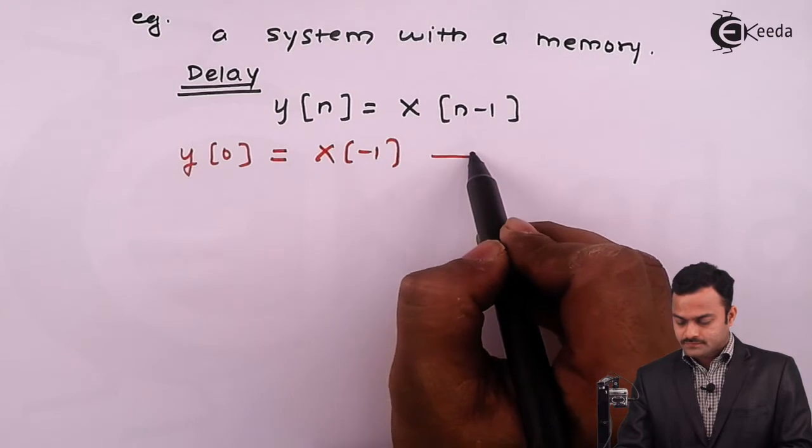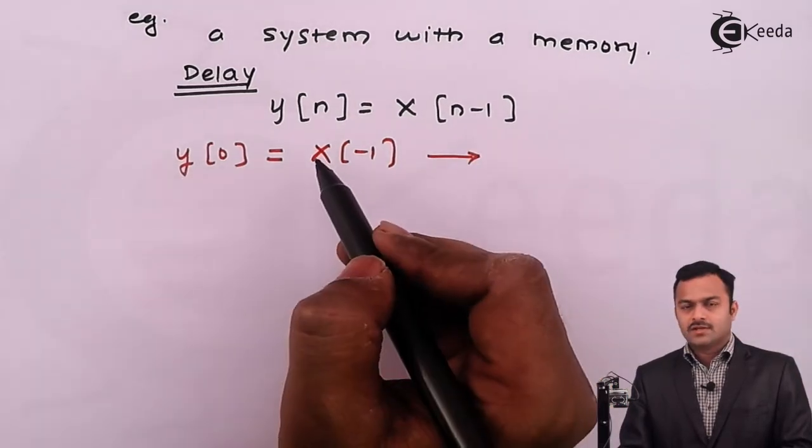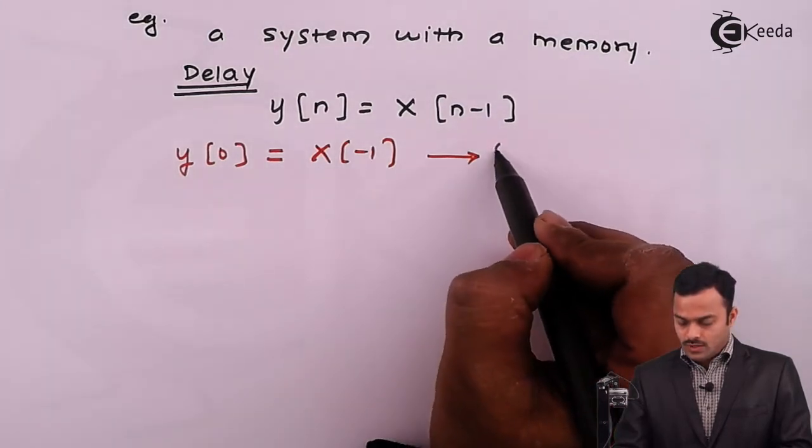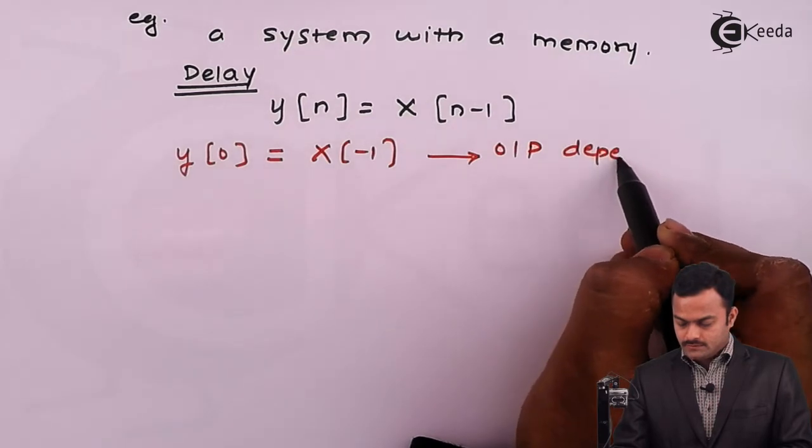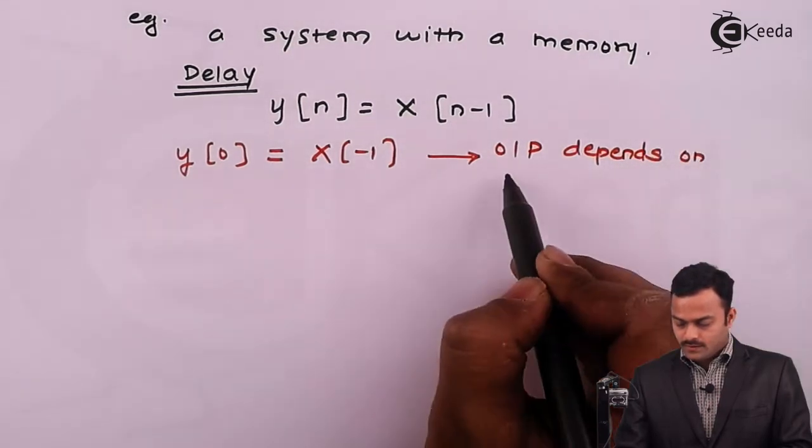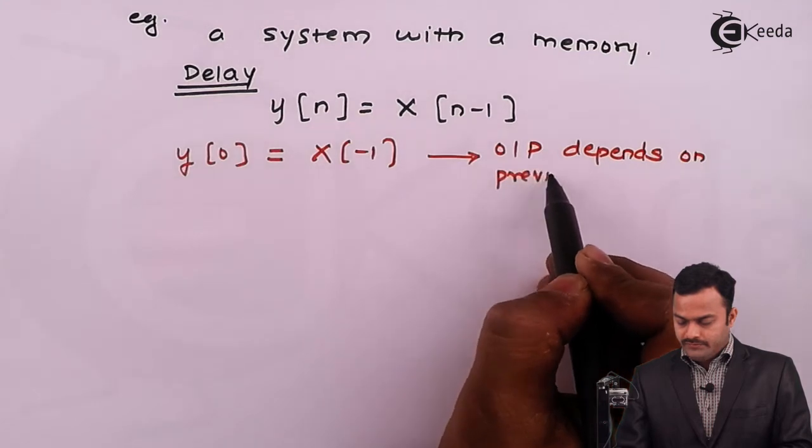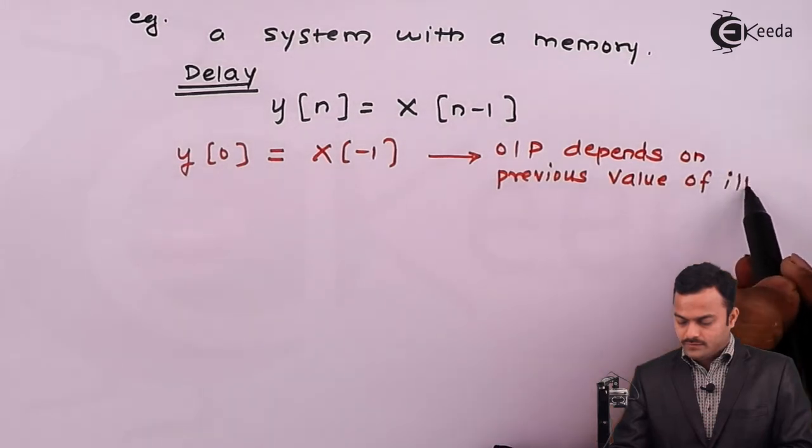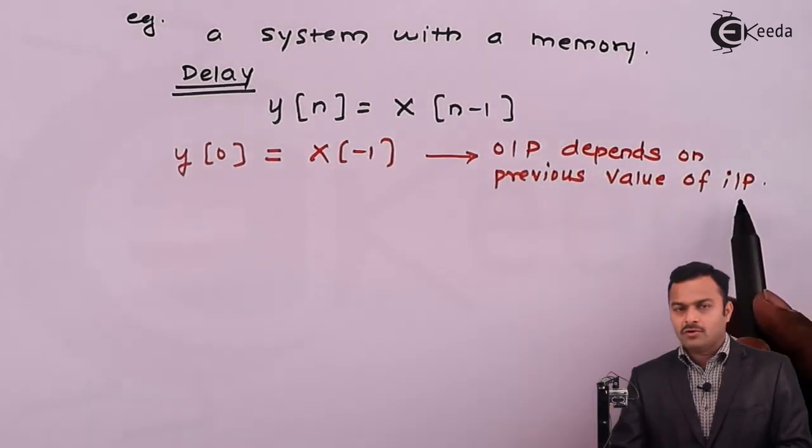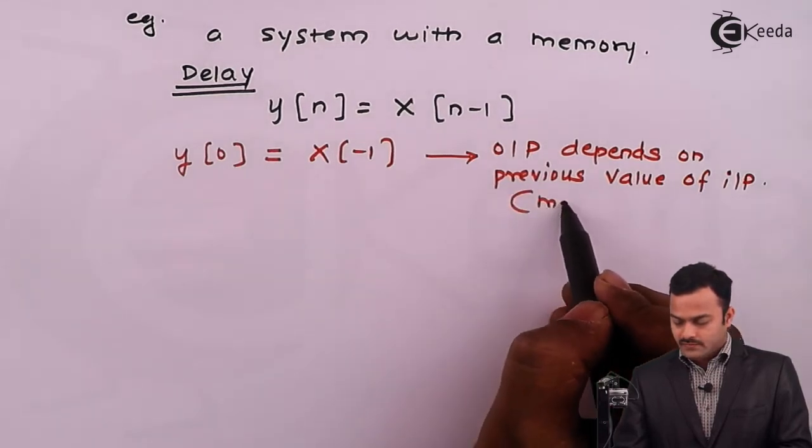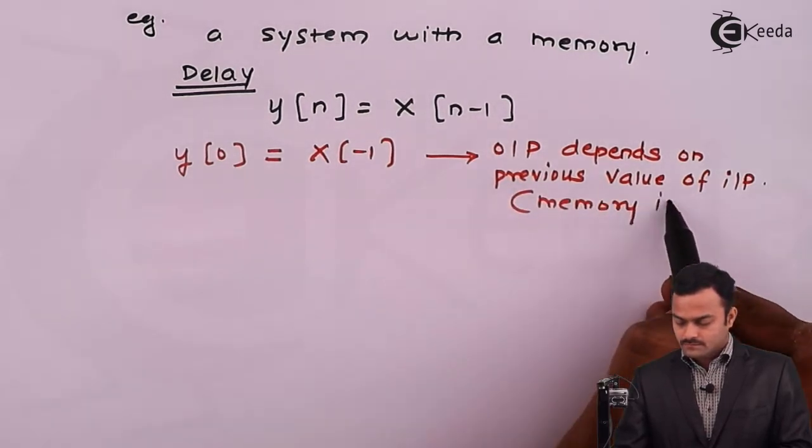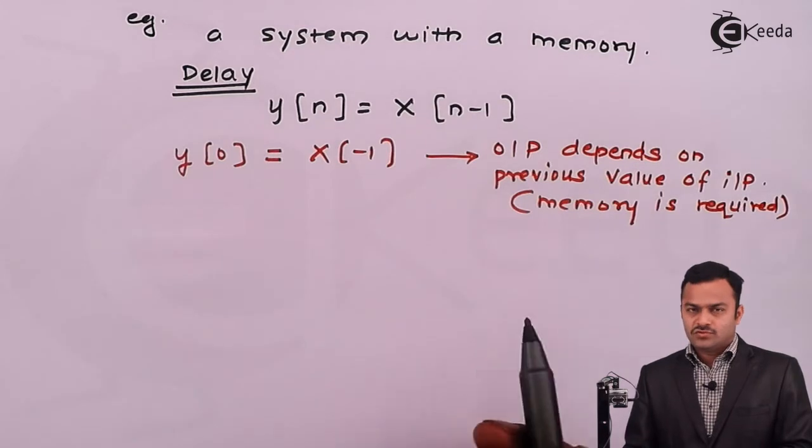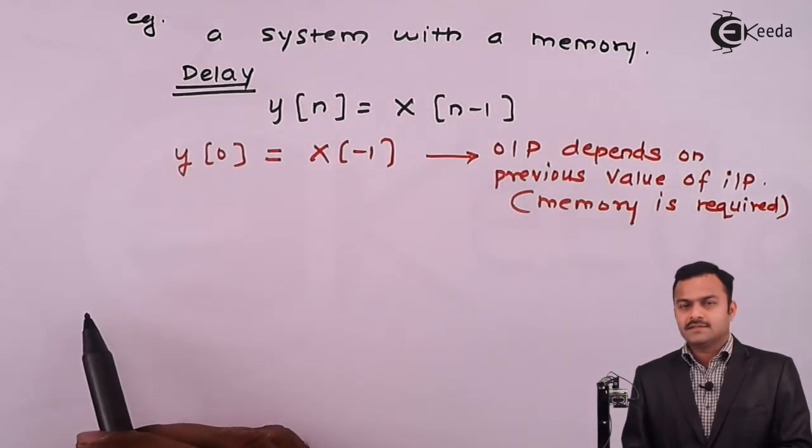What conclusion we can draw? To get y of 0, I should know what is the input at n equal to minus 1. So output depends on previous value of input. In order to know the previous value of input, memory is required.